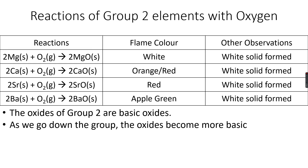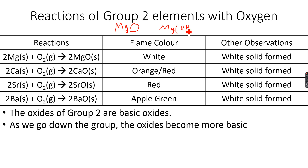As we go down the group, the oxides become more basic. This is because when we add these oxides to water, magnesium oxide barely dissolves in water. It will not readily give magnesium hydroxide, Mg(OH)₂. Mg(OH)₂ contains the OH⁻ ions and is therefore alkaline, but it does not form readily in this case because magnesium oxide is barely soluble.